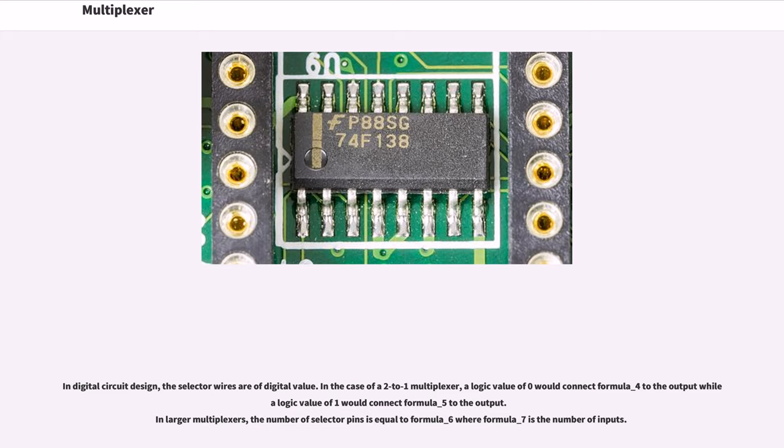In digital circuit design, the selector wires are of digital value. In the case of a 2 to 1 multiplexer, a logic value of 0 would connect formula underscore 4 to the output while a logic value of 1 would connect formula underscore 5 to the output.